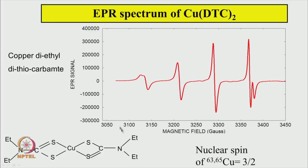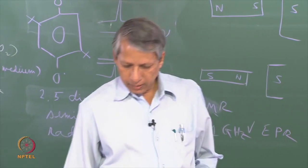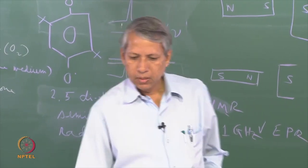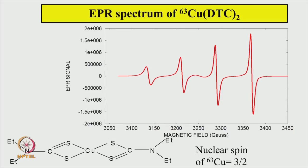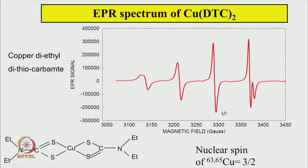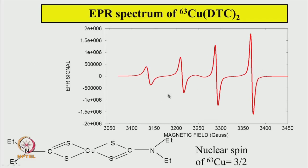Naturally occurring copper has two isotopes — copper-63 and copper-65 — both with nuclear spin 3/2. When the sample is chemically purified to contain only the copper-63 isotope, the complex spectrum simplifies to 4 lines. Though the 4 lines do not have the same intensities — the strongest is on the right and they become smaller going left — their widths also increase going from right to left.